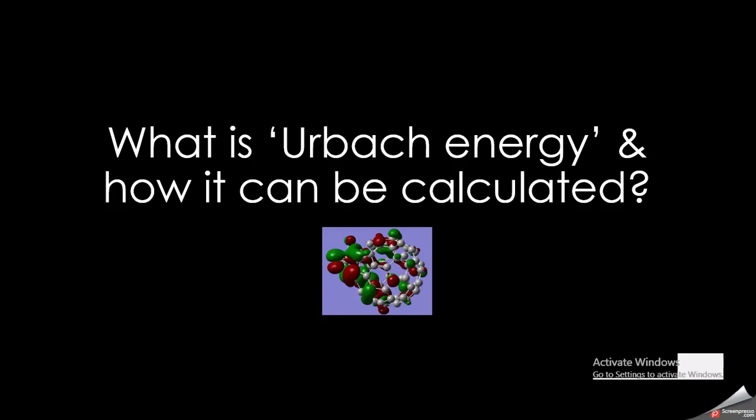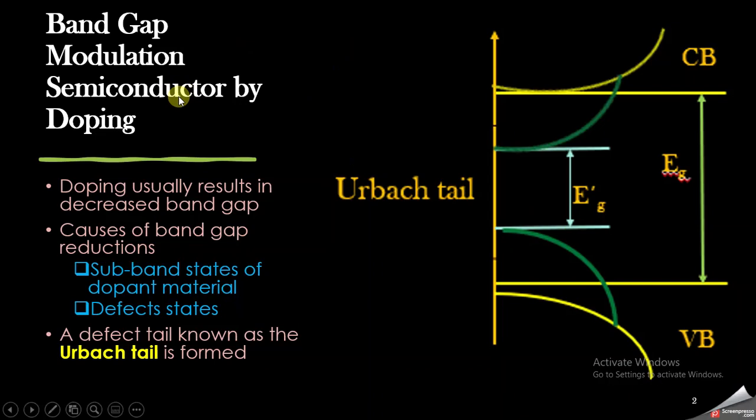In this video we are going to see what Urbach energy is and how it can be calculated. In semiconductor or semiconductor oxide materials, we have a thing called the band gap. A band gap is the difference of energy between the conduction band and the valence band. This band gap, represented by Eg, can be changed or modulated by doping or by incorporation of another metal into the pure material.